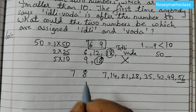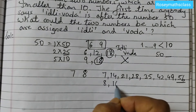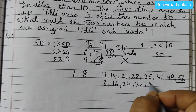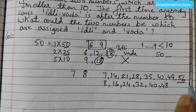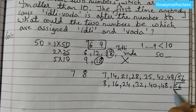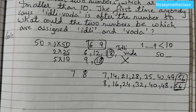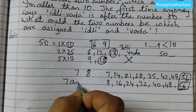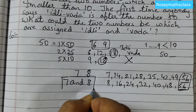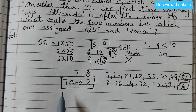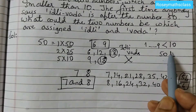Now let us check multiples of 8: 8, 16, 24, 32, 40, 48, 56. The first common multiple of 7 and 8 is 56. So the two numbers are 7 and 8, because the first time we say Idli Vada is at 56, which is greater than 50, and both numbers are smaller than 10.